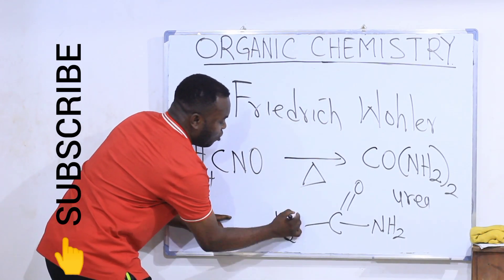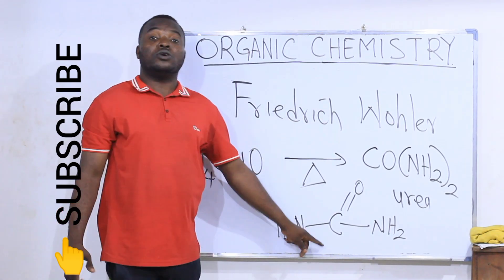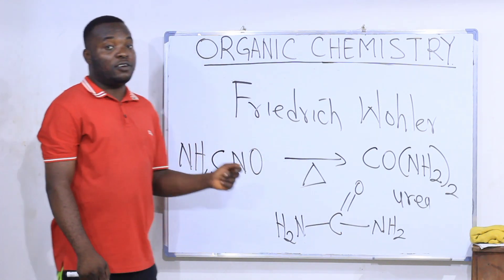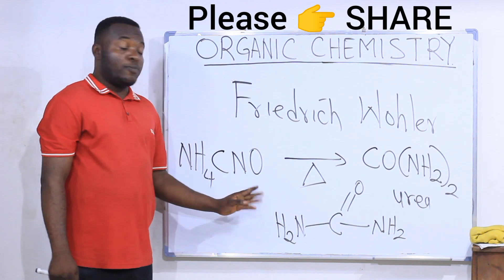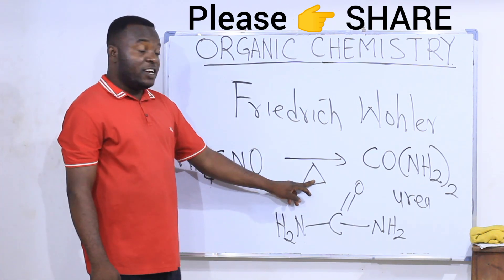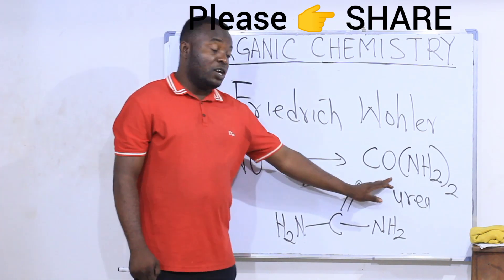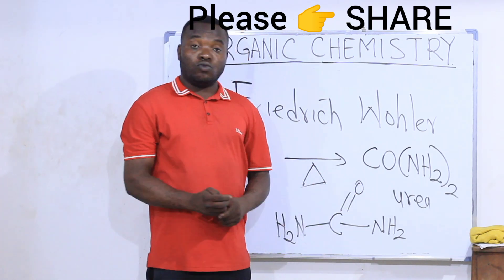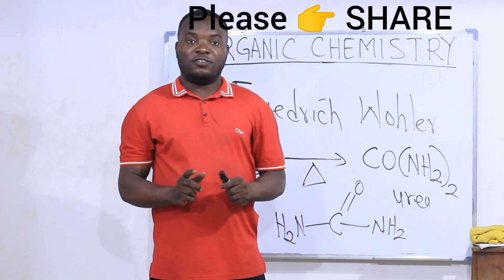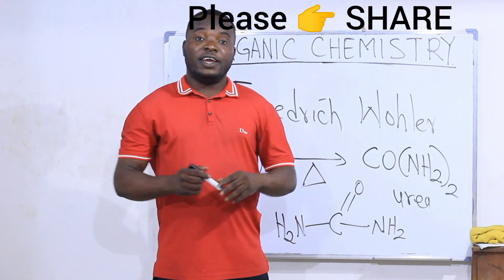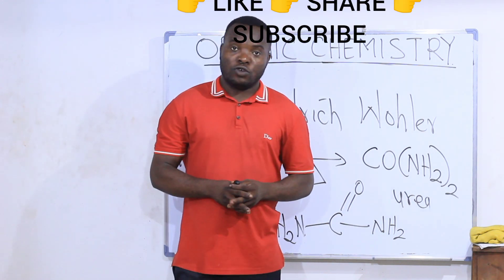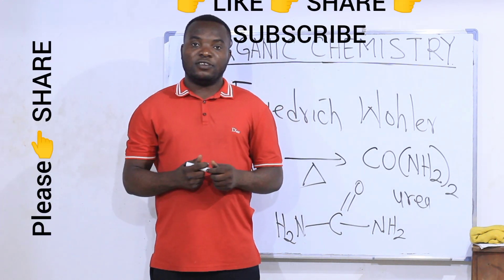This was the first organic compound to be produced using an inorganic material. Remember, the inorganic material that was used is ammonium cyanide. On heating ammonium cyanide, urea was formed. This was done in the year 1828 by Friedrich Wöhler. Ever since then, so many other organic compounds can now be produced using inorganic materials.